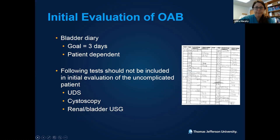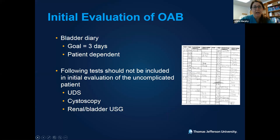What about bladder diaries? I have a love-hate relationship with them — they can be really helpful. We ask patients to fill out a three-day diary tracking what they're drinking, how often they're voiding, how often they're having incontinence episodes, and ideally how much they're voiding. If a patient comes back having completed one or two days, I'm thrilled. For a compliant patient, it can be a powerful tool to see in black and white how much they're actually drinking and how many times they're voiding. For the initial evaluation of standard idiopathic OAB, urodynamics, cystoscopy, and imaging would not be indicated.